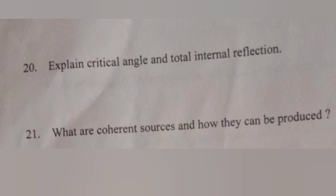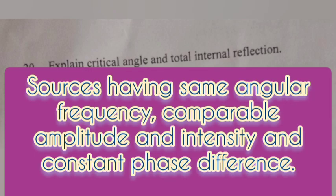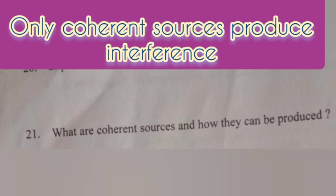Question 21. What are coherent sources and how can they be produced? Answer: Sources having same angular frequency, comparable amplitude and intensity, and constant phase difference. Only coherent sources produce interference.